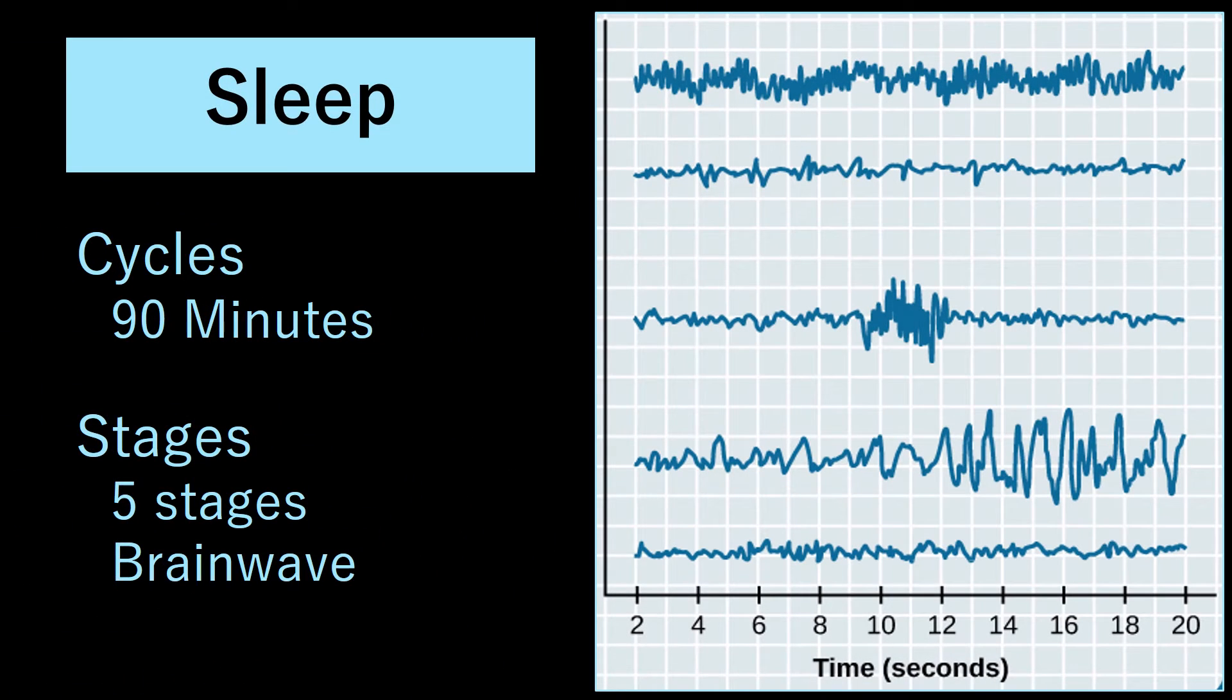Every night when we sleep, we sleep in generally 90-minute chunks. Each 90-minute chunk can be broken up into as many as five stages, and each stage is defined by dominant brainwaves. They could put you in a sleep lab, hook you up to EEGs, and actually tell what stage of sleep you're in.